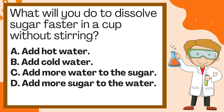What will you do to dissolve sugar faster in a cup without stirring? A. Add hot water. B. Add cold water. C. Add more water to the sugar. D. Add more sugar to the water. The correct answer is A. Add hot water.